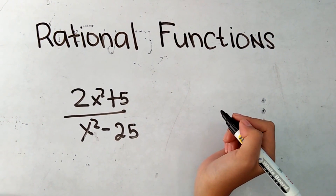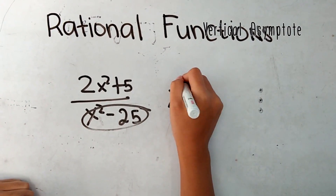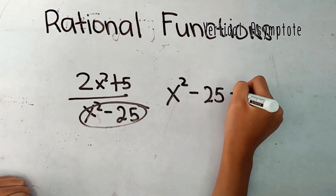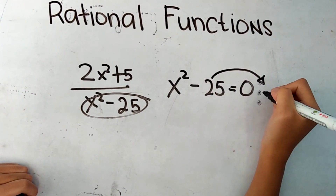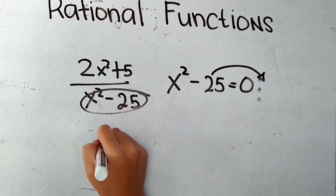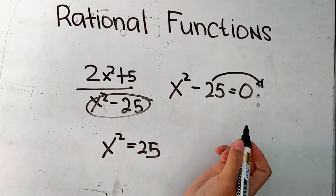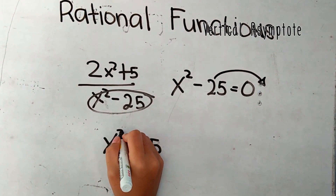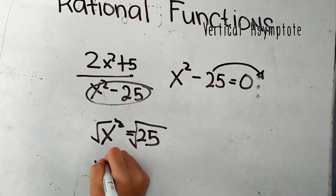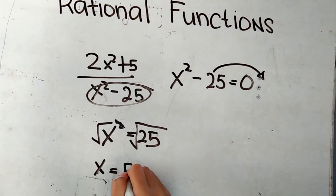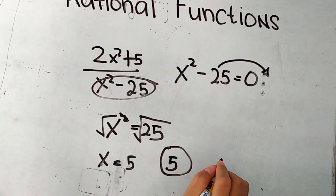To find the vertical asymptote of f of x equals 2x squared plus 5x over x squared minus 25, we equate the denominator to zero: x squared minus 25 equals zero. Transposing gives x squared equals 25. Taking the square root of both sides, x equals the square root of 25, which is 5. Therefore, x equals 5 and x equals negative 5 are our vertical asymptotes.